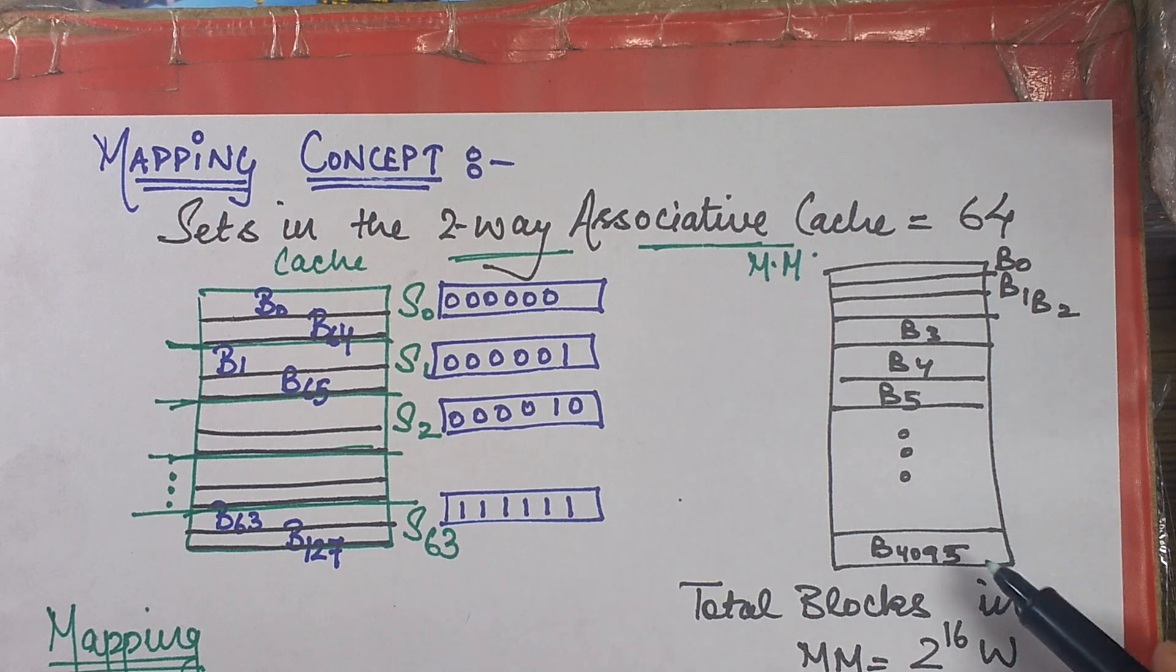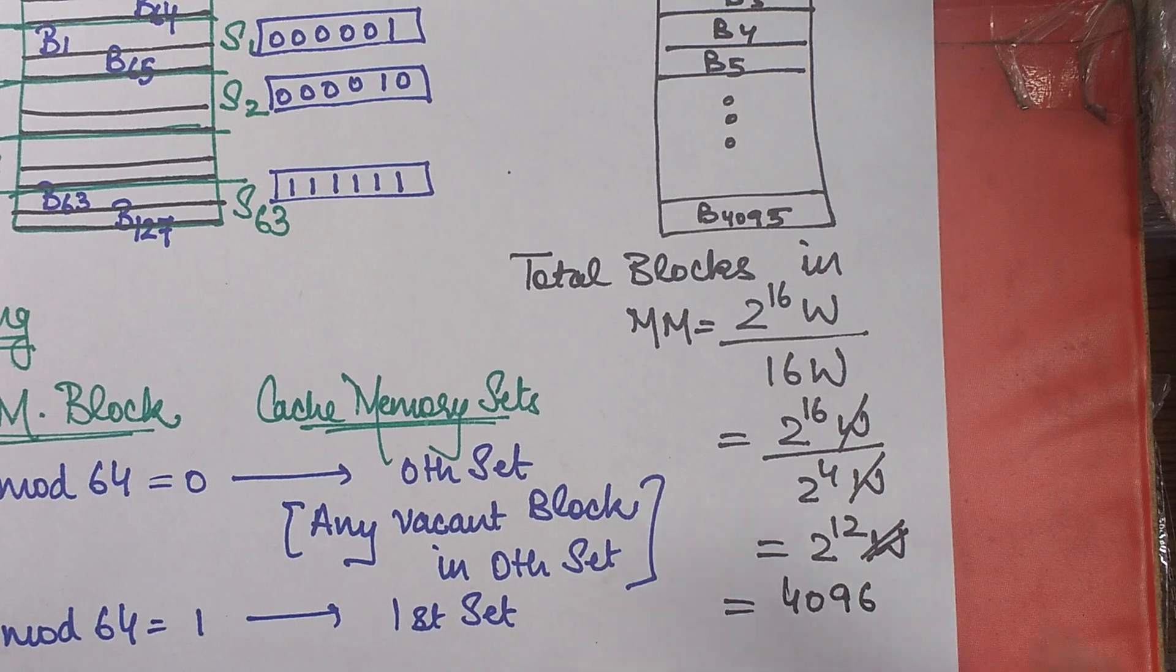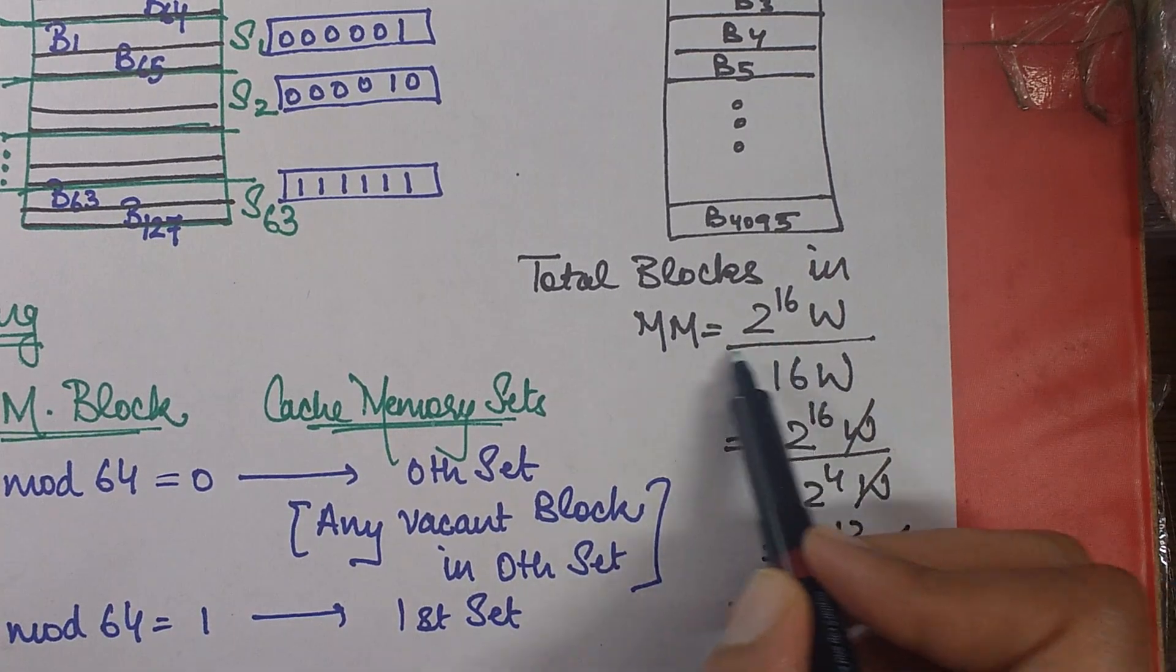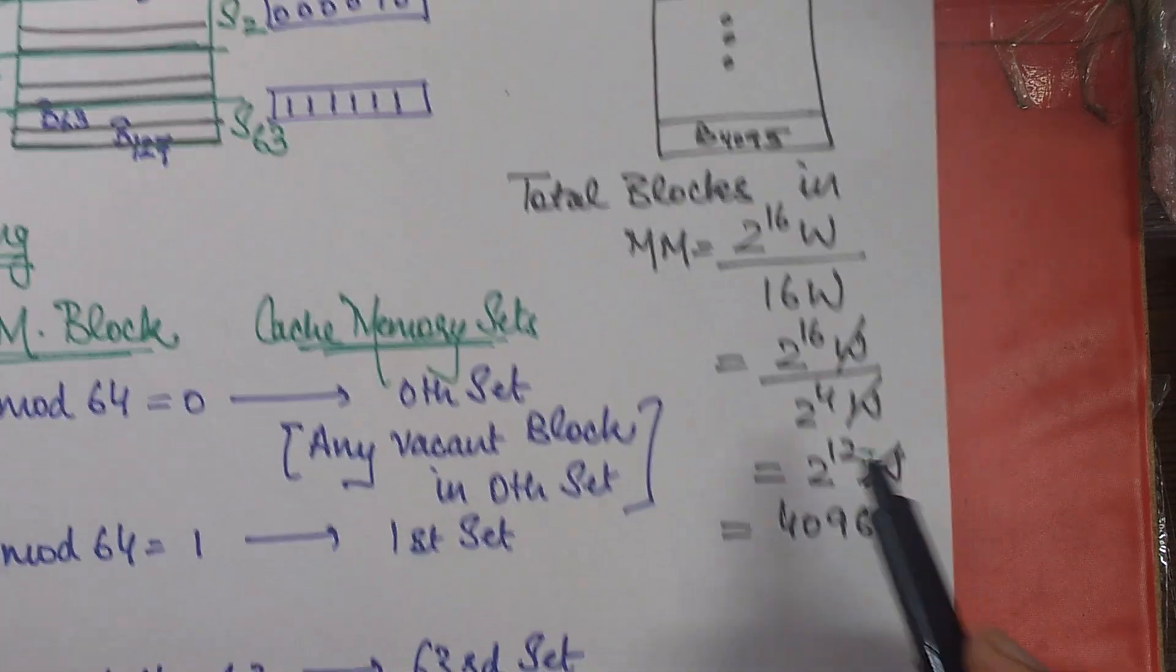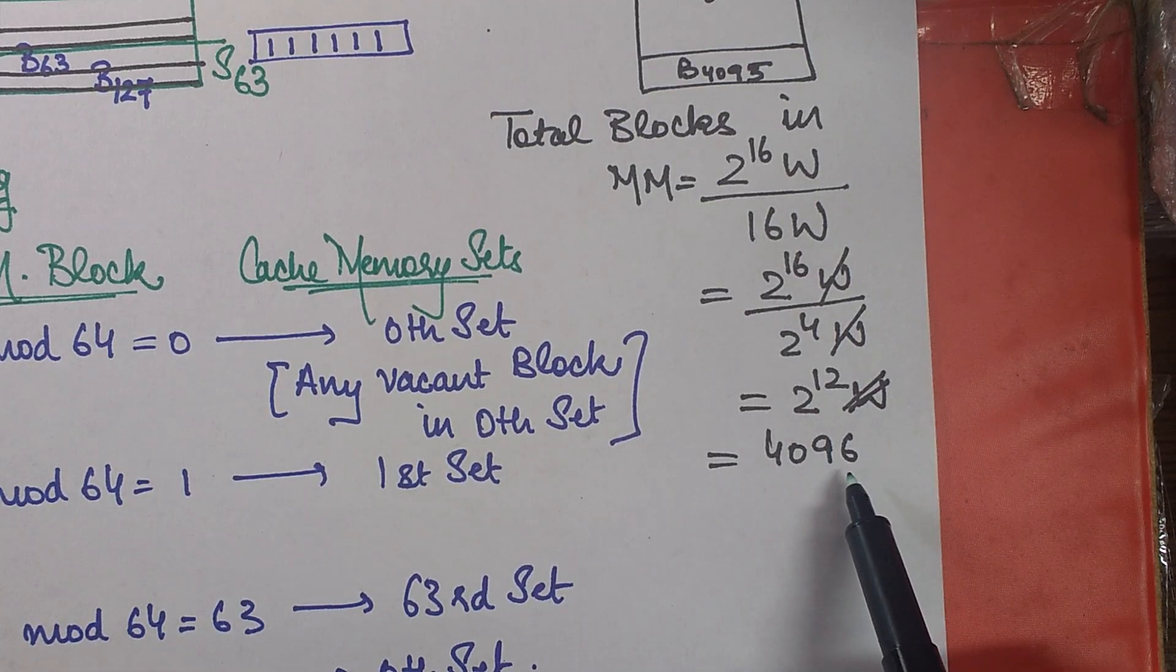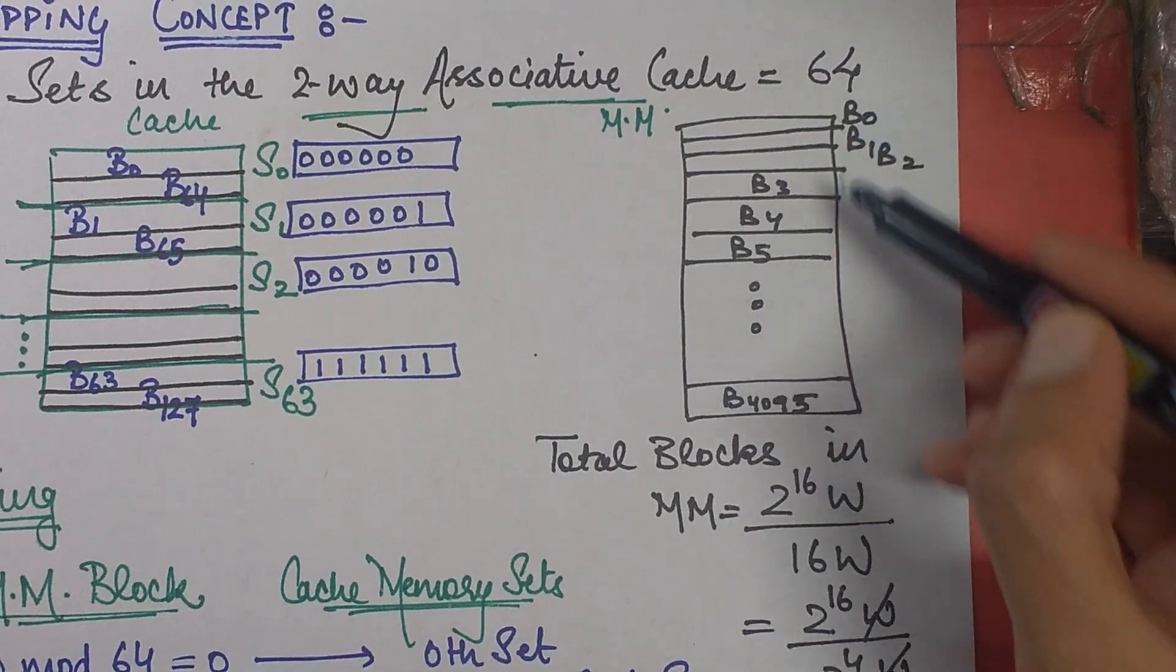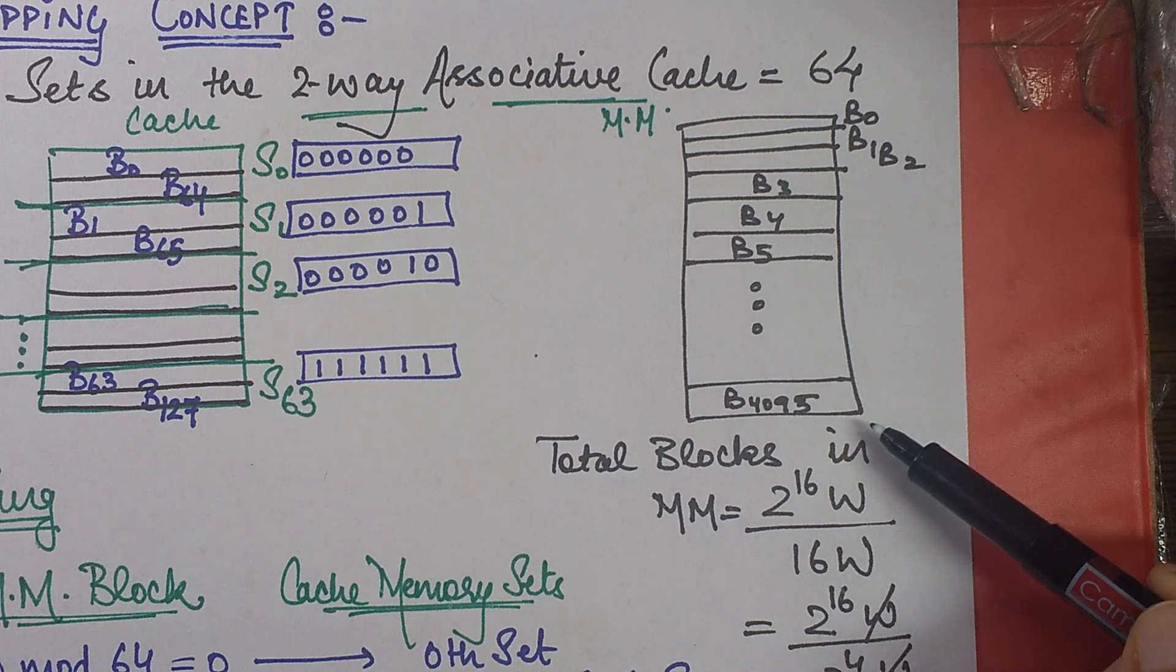Then I have my main memory, which has how many blocks. We didn't compute the number of blocks. So it is very simple. Just divide the total size of main memory by the size of one block and you'll eventually get it as 4096, which is 2 to power 12, which is 4096. So that means you have 4096 blocks over here. B0 to B4095.